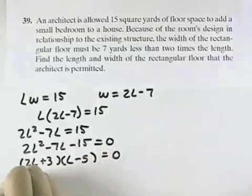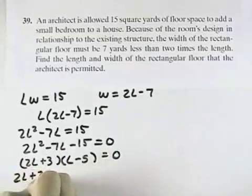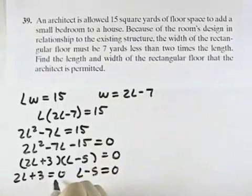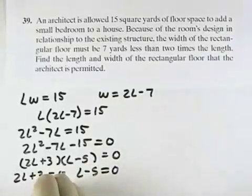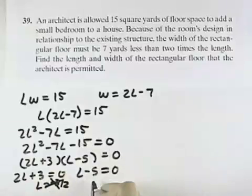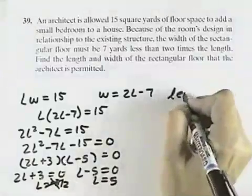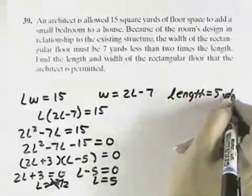Using that then, setting each of these equal to 0, we have 2L plus 3 equals 0, and L minus 5 equals 0. Well, in the first one, we would subtract 3 and divide by 2 to get L equals negative 3 halves, but it can't be negative, so instead we'll add 5 and get L equals 5. So that means our length equals 5 yards.